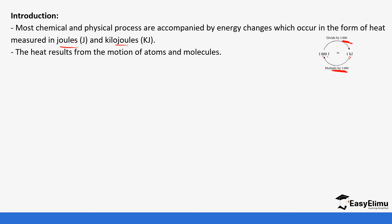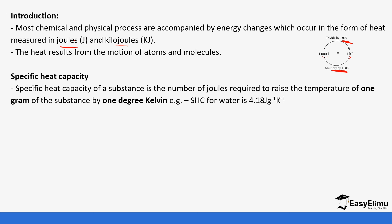Heat results from the motion of atoms and molecules, and with that we introduce a concept called specific heat capacity. It is the number of joules required to raise the temperature of 1 gram of a substance by 1 degree kelvin. The specific heat capacity of water, which we use as the standard, is 4.18 joules per gram per kelvin. Our temperatures will be in kelvins and our mass can be in grams or kilograms — 1,000 grams equals one kilogram.